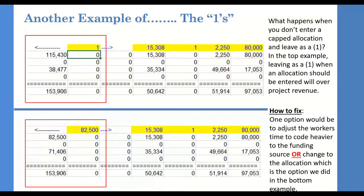Returning to the SSBG example: total estimated spending is $153,906 but the allocation is only $82,500. If you leave it as a one, it projects false revenue — showing reimbursement you won't receive. You could enter the allocation instead, though this results in higher county costs of approximately $71,000. Alternatively, you could go back and adjust workers' time to code more to SSBG, but only if it's a true reflection of what the worker is actually doing. Do not change coding just to reduce county costs.